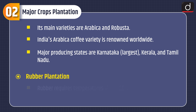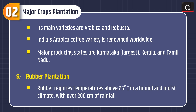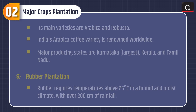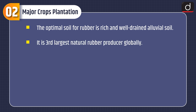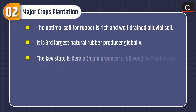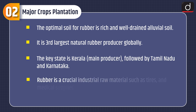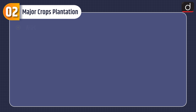Rubber Plantation: Rubber requires temperatures above 25 degrees Celsius in a humid and moist climate with over 200 cm of rainfall. The optimal soil for rubber is rich and well-drained alluvial soil. India is the third-largest natural rubber producer globally. The key state is Kerala, followed by Tamil Nadu and Karnataka.